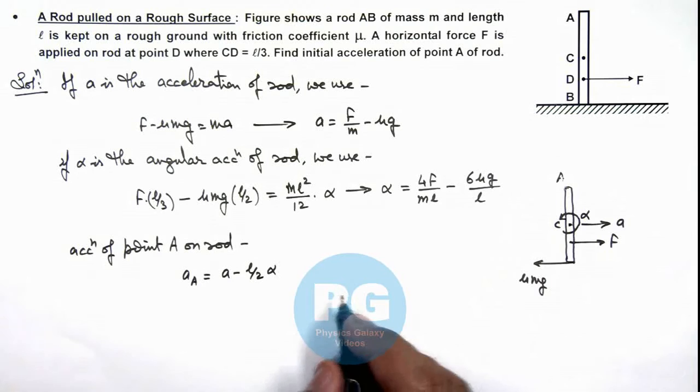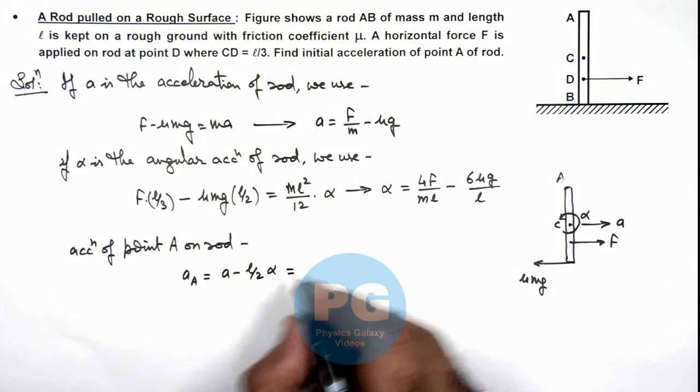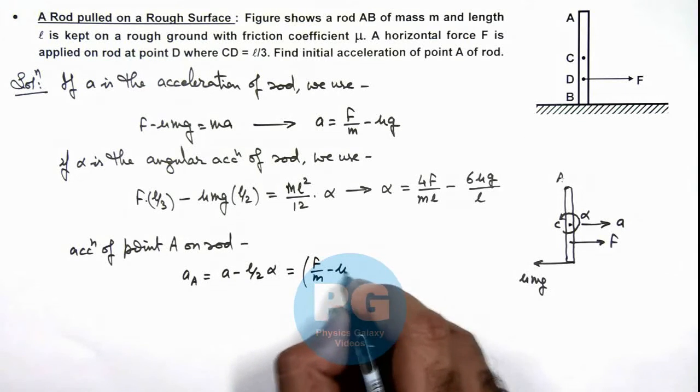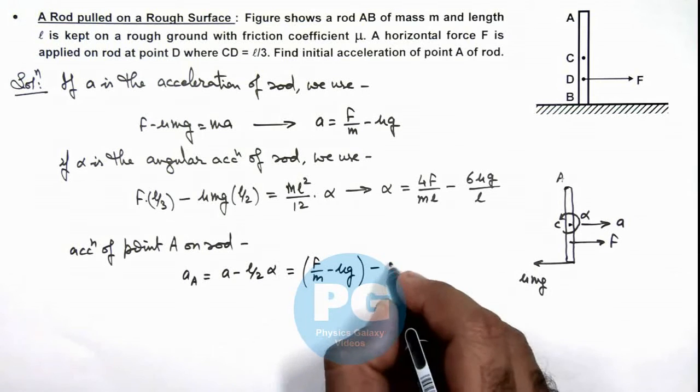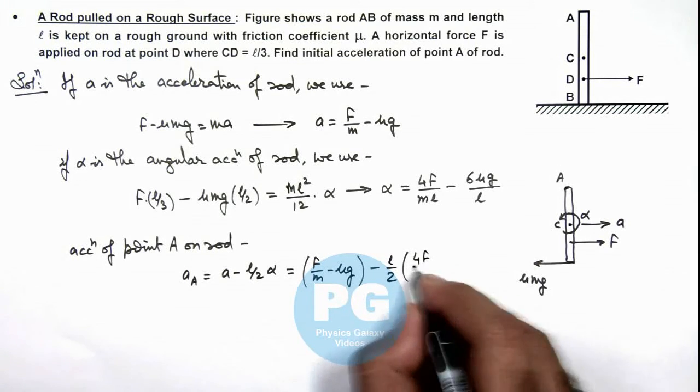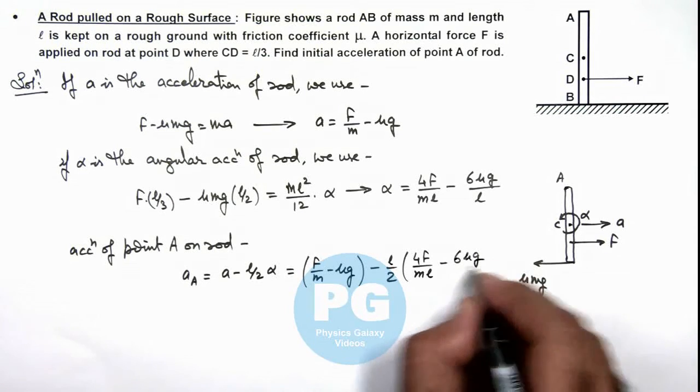So here if we substitute the value of a and α, this gives us the value of acceleration of A is F by m minus μg, minus l by 2 times α which is 4F upon ml minus 6μg by l.